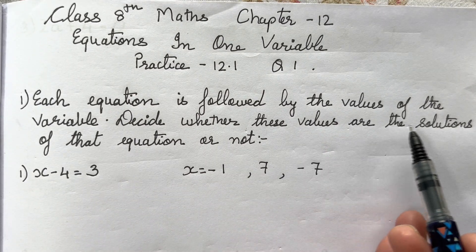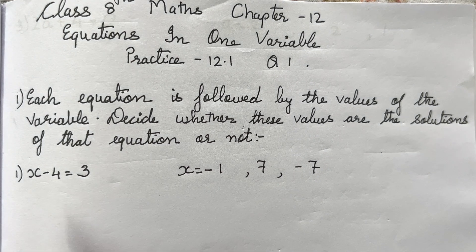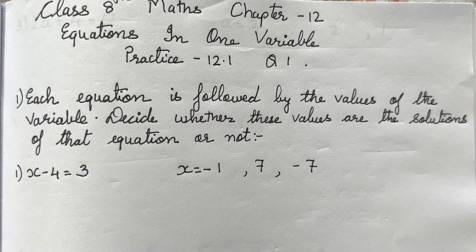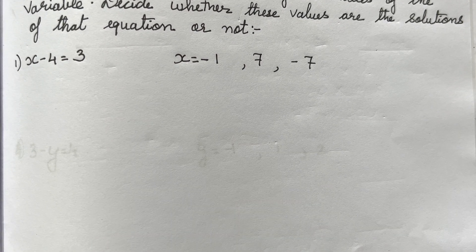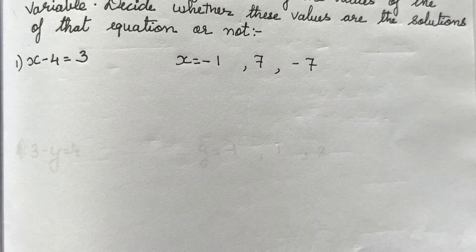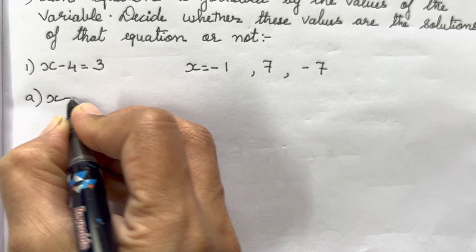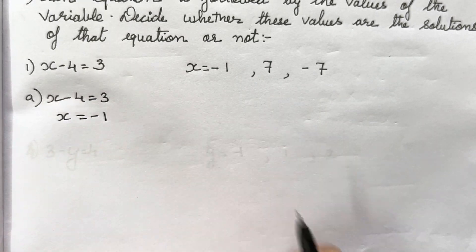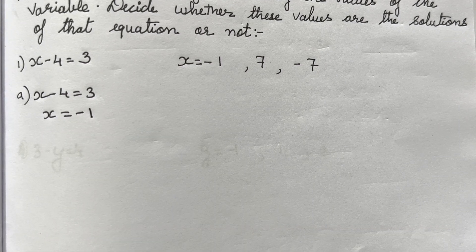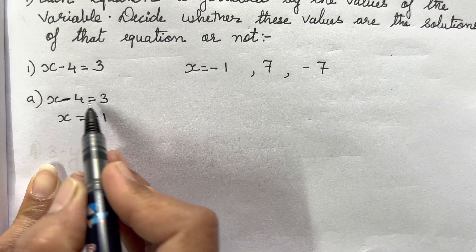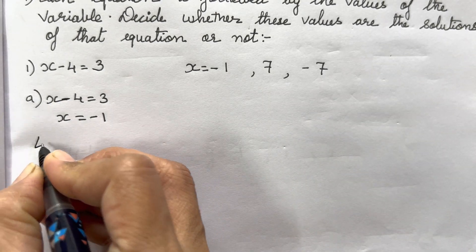Now let's start with the first question. Each equation is followed by values of the variable; we have to decide whether these values are solutions of that equation or not. This equation has been given and we have to substitute the value of x with -1, 7, and -7. We have to use each value in the same equation — we cannot take our own values. There are two methods: Left Hand Side and Right Hand Side, and we need to find both.